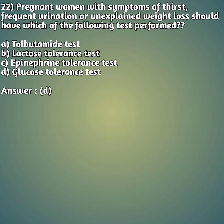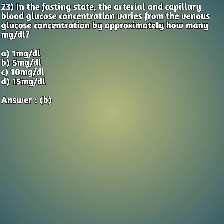Question 22: A pregnant woman with symptoms of thirst, frequent urination, or unexplained weight loss should have which test performed? Option A: tolbutamide test, option B: lactose tolerance test, option C: epinephrine tolerance test, option D: glucose tolerance test. The right answer is option D, glucose tolerance test (GTT).